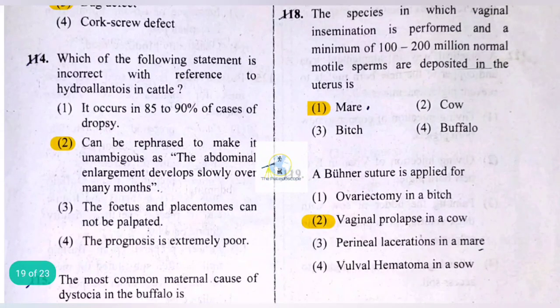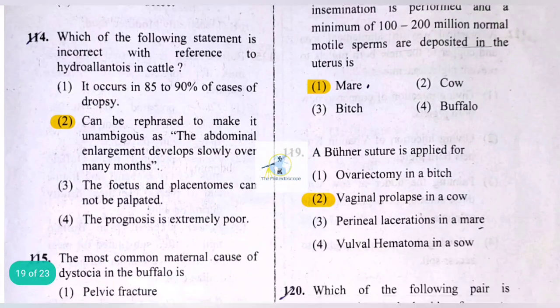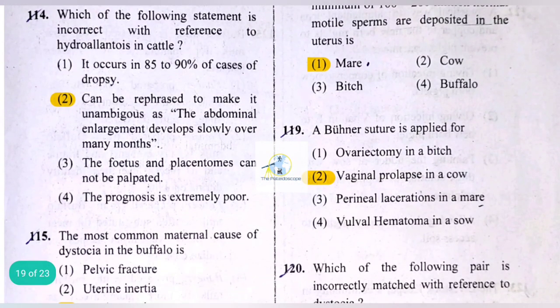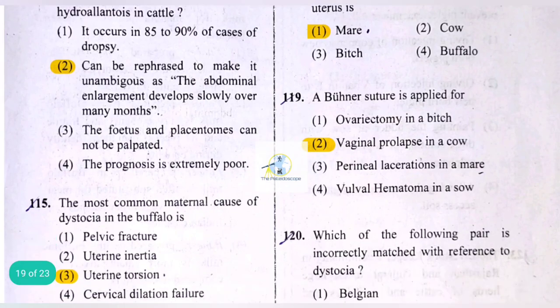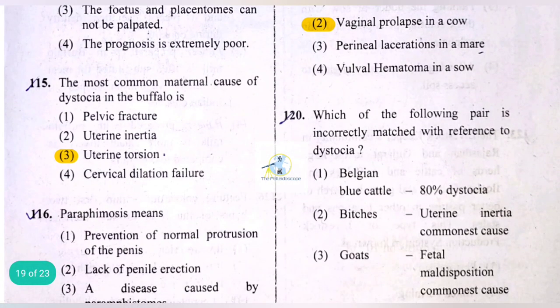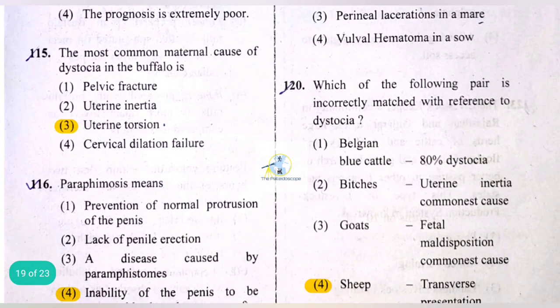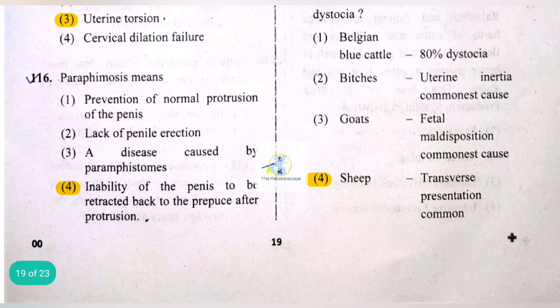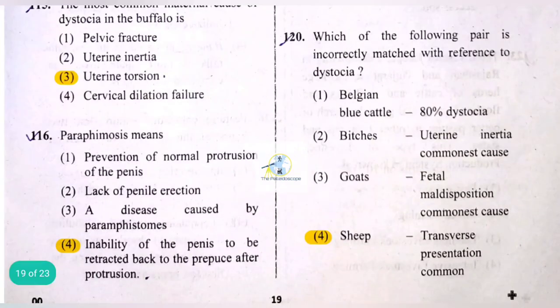The most common maternal cause of dystocia in buffalo is uterine torsion. Paraphimosis means inability of the penis to be retracted back into the prepuce after protrusion.